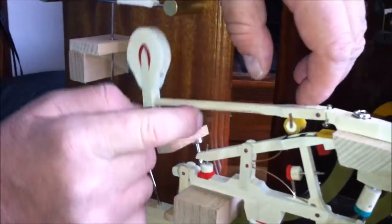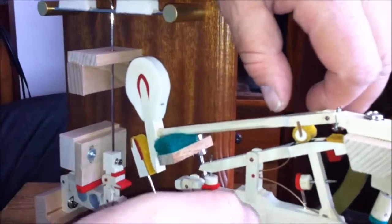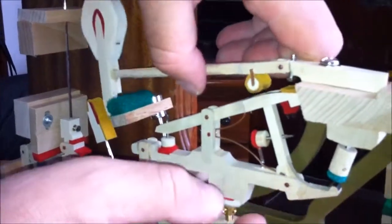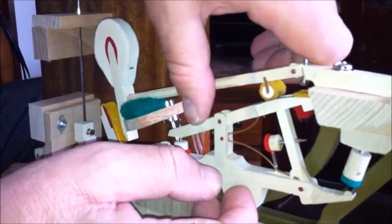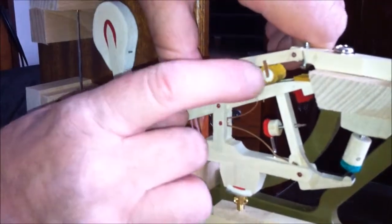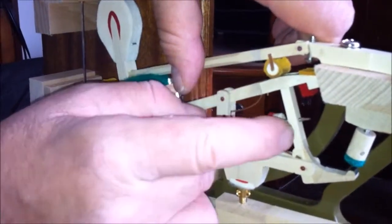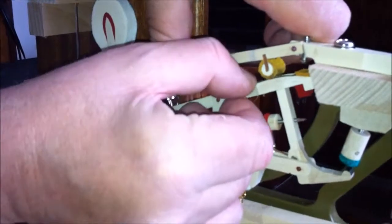Now on a grand piano, we have a knuckle instead of a butt, and the jack is positioned under it. What holds the knuckle above the jack is the repetition lever.